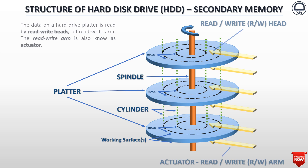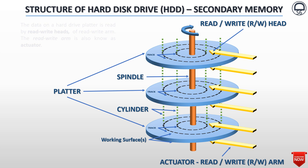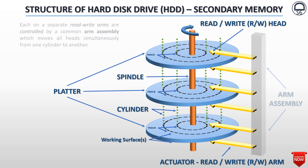The data on a hard drive platter is read by read-write heads of the read-write arm. The read-write arm is also known as the actuator. Each head on a separate read-write arm is controlled by a common arm assembly, which moves all heads simultaneously from one cylinder to another.